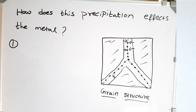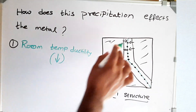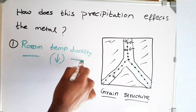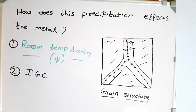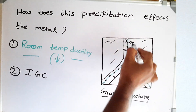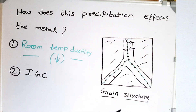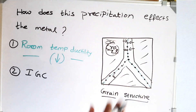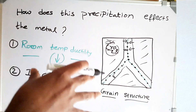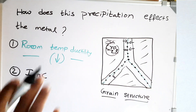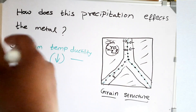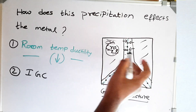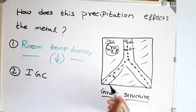Let's see what problems this precipitation of chromium carbide at the grain boundary creates. One main problem is that chromium carbide makes the grain boundaries brittle, decreasing the room temperature ductility of the structure. Now, chromium depleted from the surrounding areas and got deposited at the grain boundary, so the rest of the structure is chromium-rich and protected by a chromium oxide layer — but not at the grain boundary, since chromium there is depleted. The whole surface of the metal acts as cathode and only the small areas just adjacent to the grain boundary act as anode.